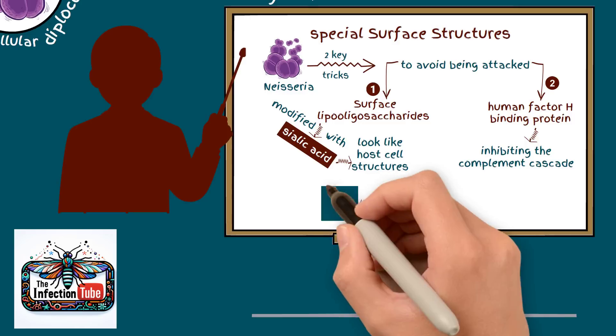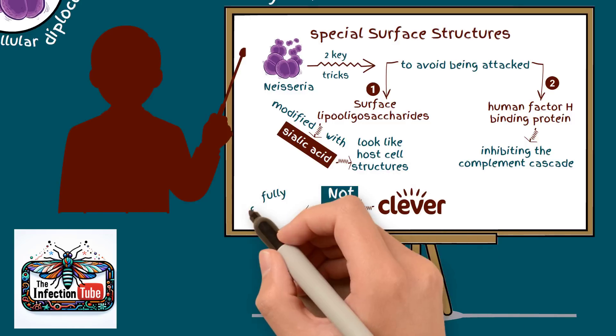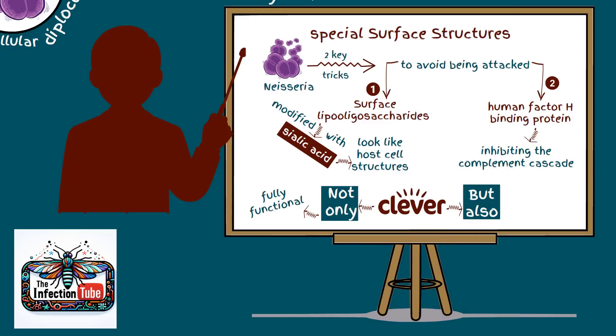This clever disguise is not only critical for Neisseria's survival in hosts with a fully functional complement system but also becomes a vital survival tactic in the face of complement deficiencies.